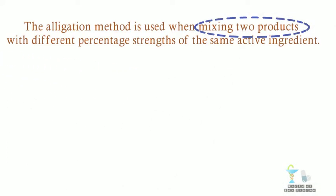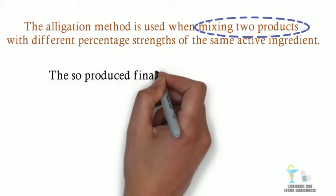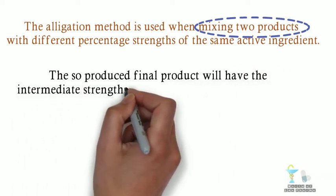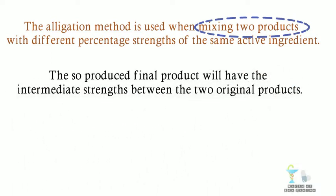The alligation method is used when mixing two products with different percentage strengths of the same active ingredient. The so-produced final product will have the intermediate strengths between the two original products.